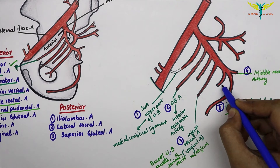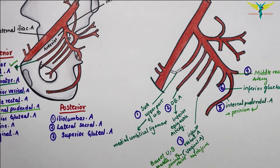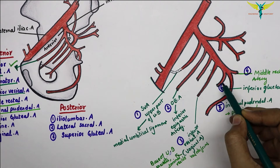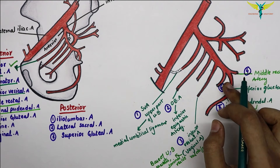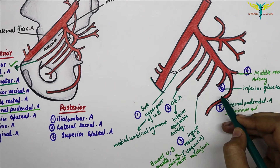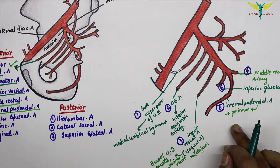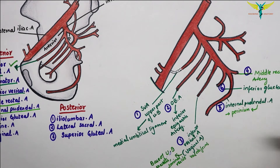The sixth branch is the inferior gluteal artery, which is the largest branch of the anterior division of the internal iliac artery. It passes posteroinferiorly between the ventral rami of S1 and S2 nerves to enter the gluteal region through the greater sciatic foramen.